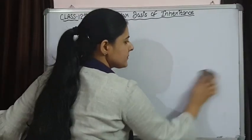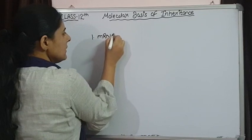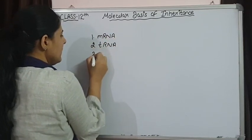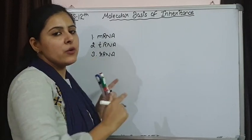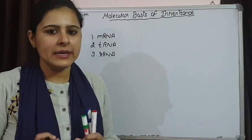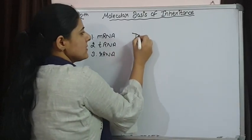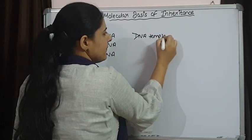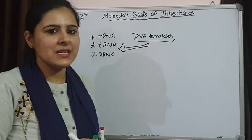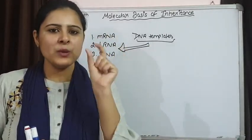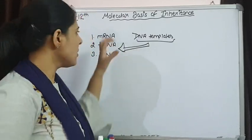These three are mRNA, tRNA, and rRNA. These are three types of RNA and if one of them is missing, protein synthesis is not going to take place. All three are important for the process of protein synthesis, and different DNA templates are responsible for the synthesis of these RNAs. Different DNA templates are required for the synthesis of these different types of RNAs.